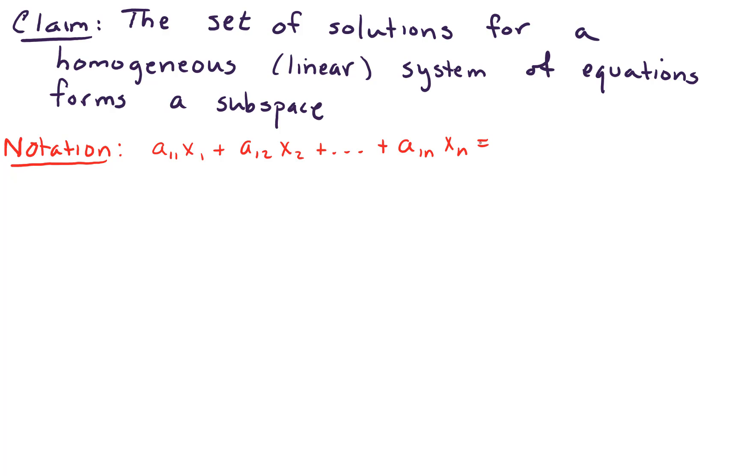That equals some constant, which in this case is 0 because it's a homogeneous system. And then we have maybe a second equation, a21, this is some coefficient, times x1 plus a22x2 and so forth. And again, that equals 0 because this is a homogeneous system.